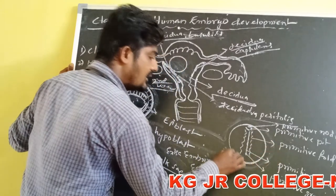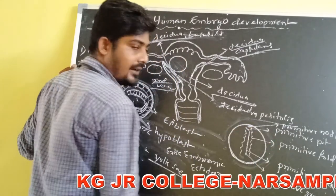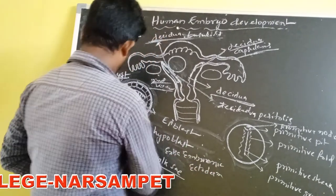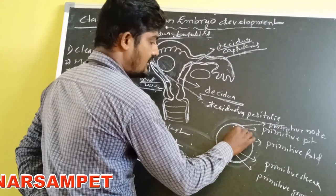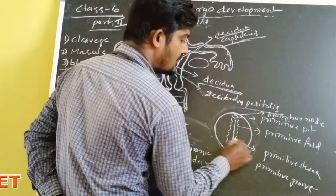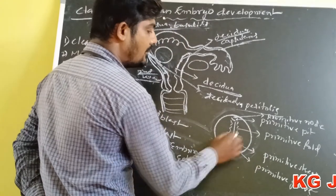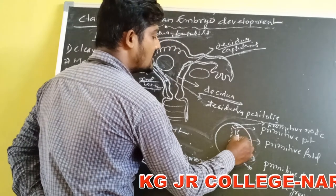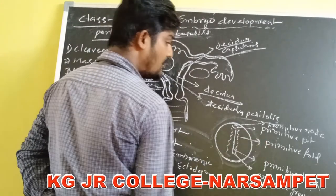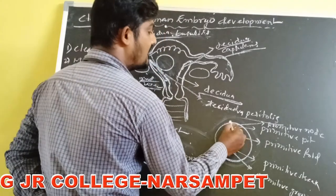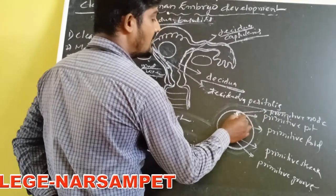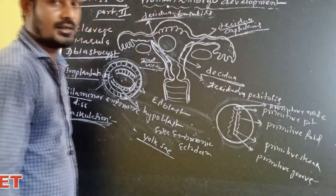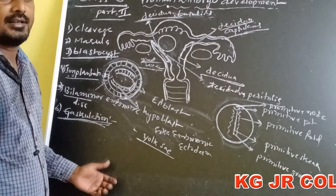During gastrulation, the bilaminar embryonic disc converts into the trilaminar disc. A primitive streak appears, and along its midline the primitive groove is formed. On either side, two primitive folds are present. There is also a primitive pit — a shallow depression — and above it the primitive node is formed. This is about gastrulation.